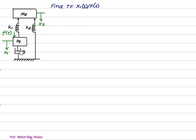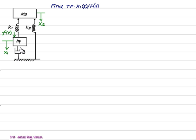Find the transfer function x1(s) over x2(s). The force is applied on mass m1, f(t) on x1, so x1 is greater than x2. Mass m2 is connected between k1 and k2. k1 is connected between x2 and x1, and k2 is connected between x2 and ground. Mass m1 has only one displacement x1, mass m2 has only one displacement x2. The damper b is connected between m1 and ground, so b has the displacement of x1 and ground.